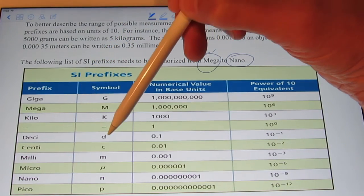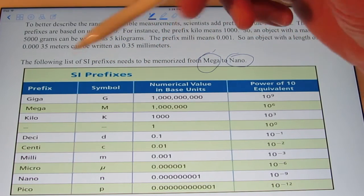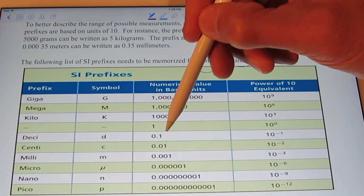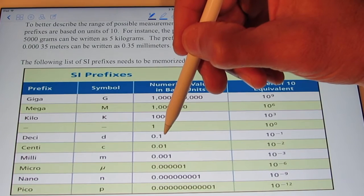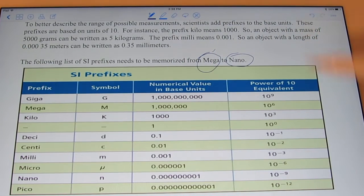Deci is abbreviated by the small letter d, and that is .1, or a tenth. So if I had a decimeter, I would have a tenth of a meter, and the numerical equivalent as a power of ten is ten to the negative first.